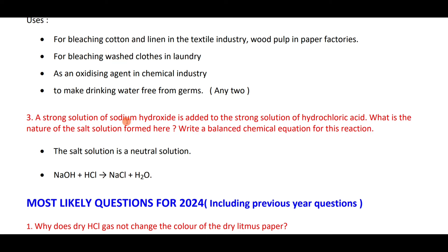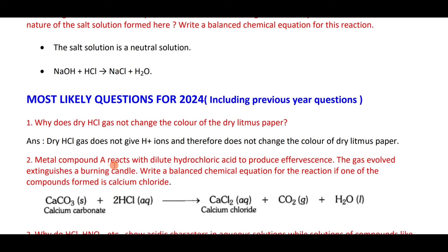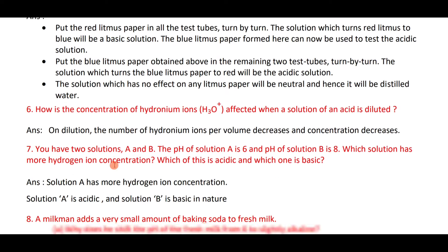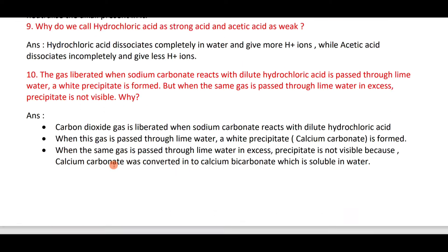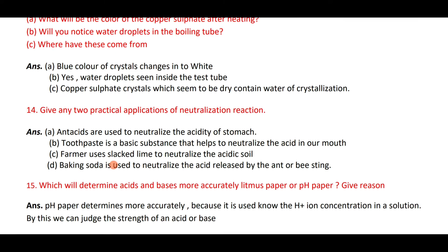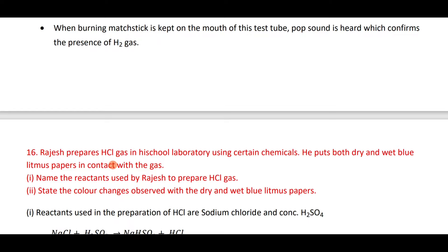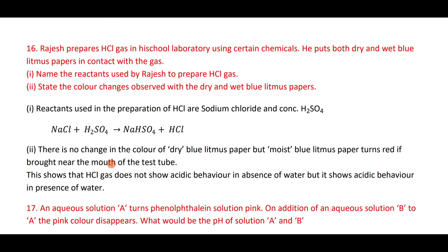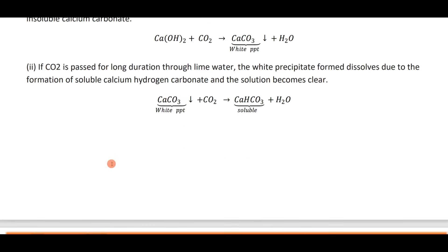When a strong solution of sodium hydroxide is added to a strong solution of hydrochloric acid: NaOH plus HCl gives NaCl plus H₂O. The nature of the salt formed will be neutral. There are additional questions included in the PDF — download it and try to learn all the question answers to score good marks.